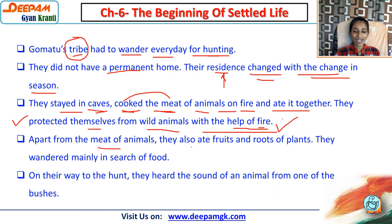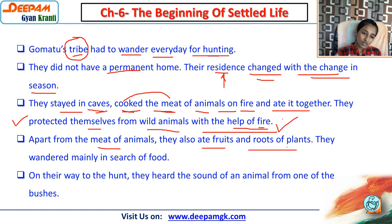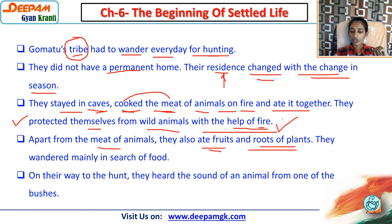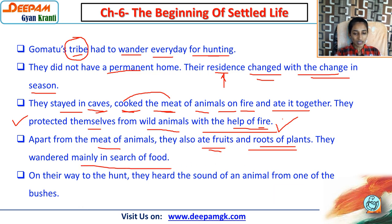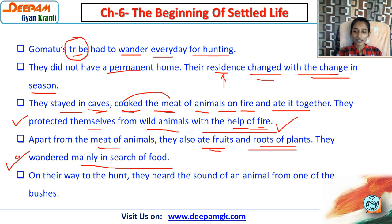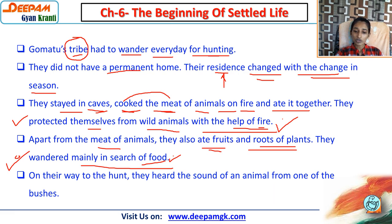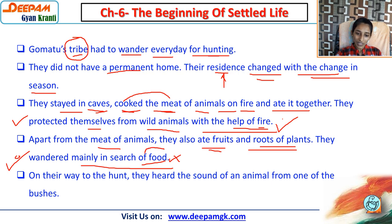Apart from the meat of animals, they also ate fruits and roots of plants. They wandered mainly in search of food - this is an important point. The main purpose of wandering was food, not finding a residence or shelter.